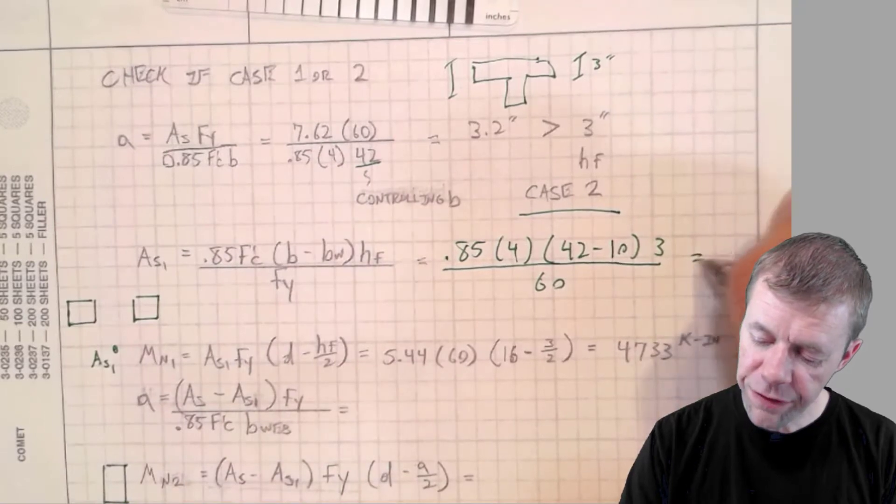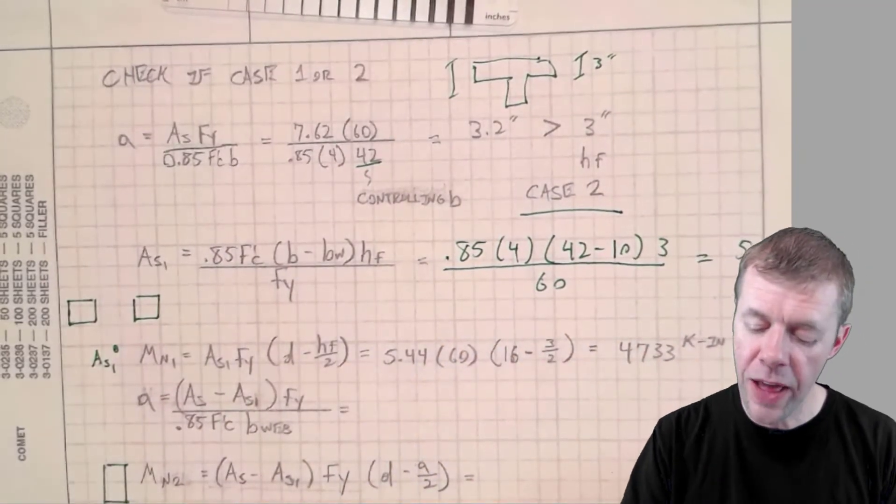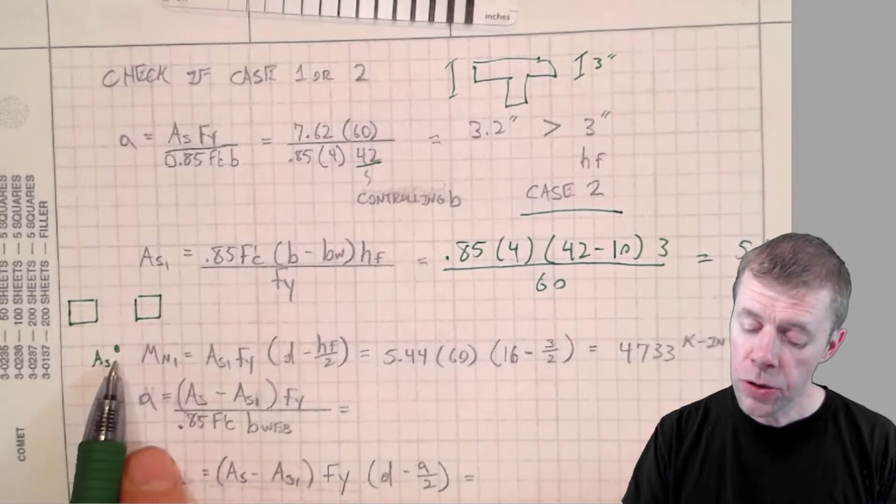And that is equal to 5.44 inches squared. That's my AS1. That's the amount of steel that balances it. So boom.